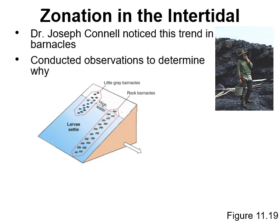Much of what we know about this comes from Joseph Connell, a Scottish scientist who did his PhD dissertation on zonation in the rocky intertidal zone, specifically on barnacles. He was interested in two types: little gray barnacles and rock barnacles. He wanted to understand why little gray barnacles are only found in the higher part, while rock barnacles are found throughout a wider range.